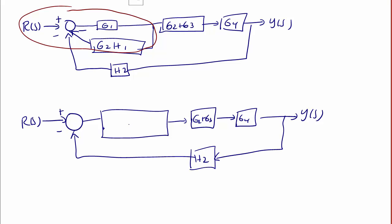And inside of this box, what I'm going to have is g1 over 1 plus g1, g2, h1.